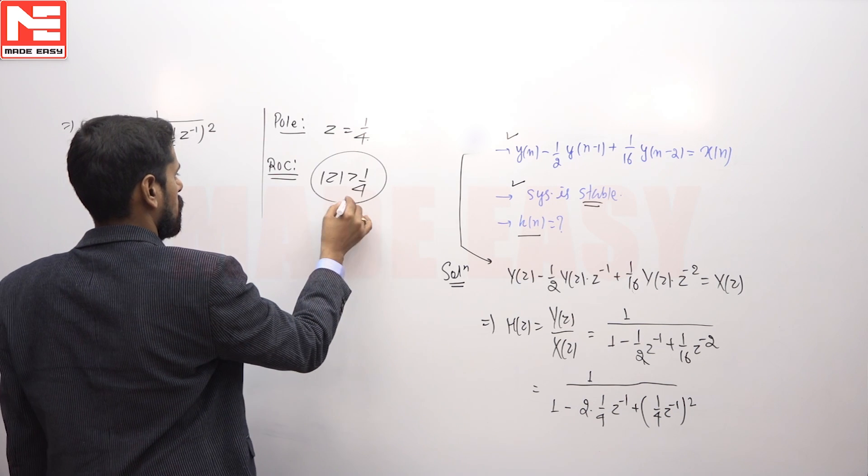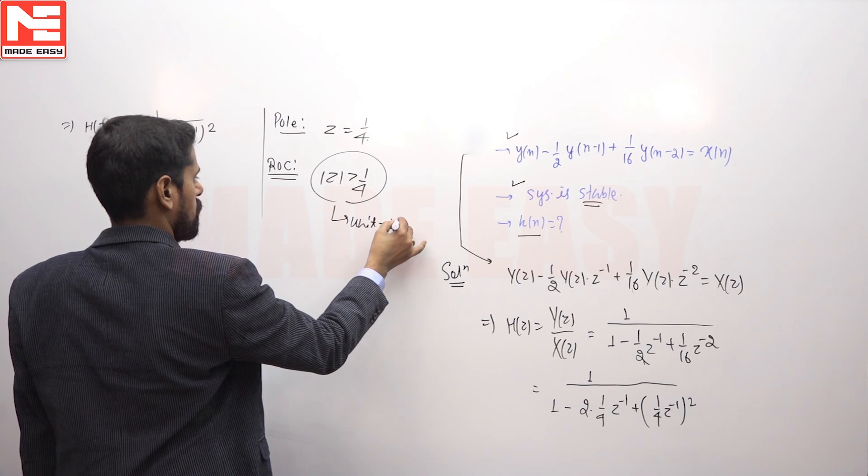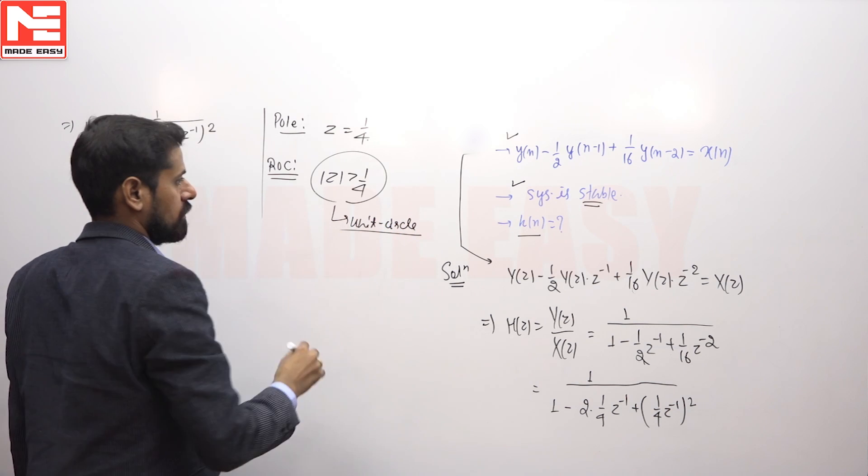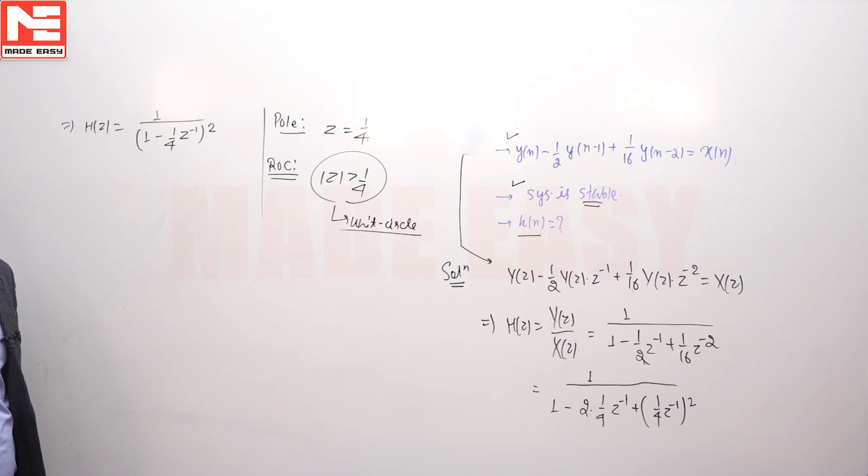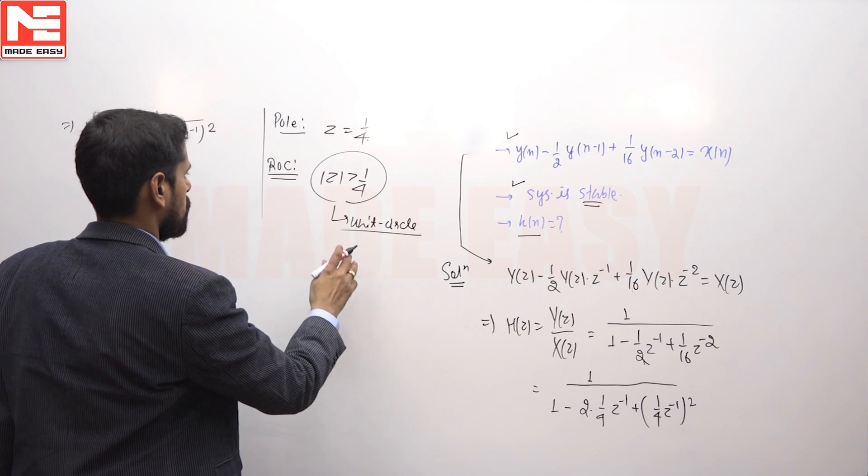It will include the unit circle, and if ROC includes the unit circle, then the nature of the system will be stable. In this case, the system will be stable.